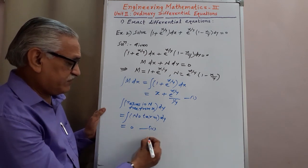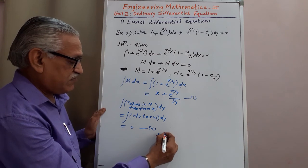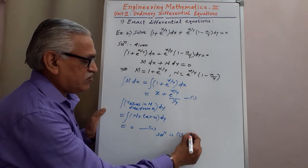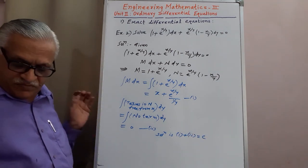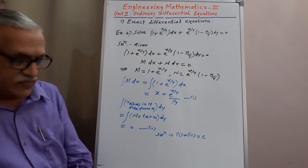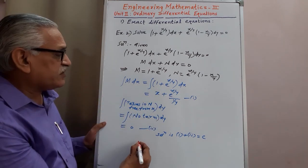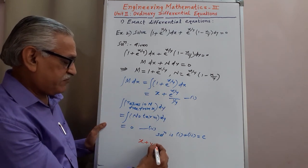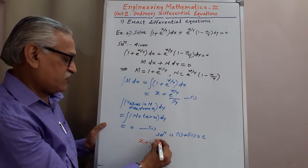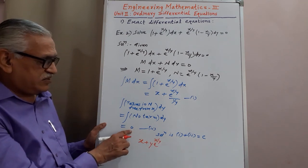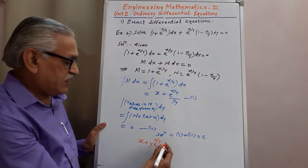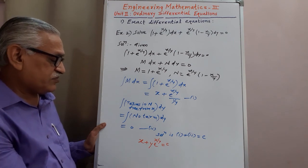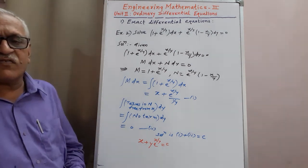Therefore the solution is equation 1 plus equation 2, equated to c. Equation 1 is x + y · e^(x/y), and equation 2 is 0. So the required solution is x + y · e^(x/y) = c.